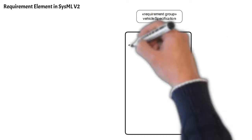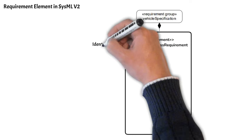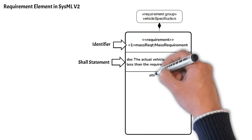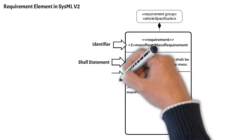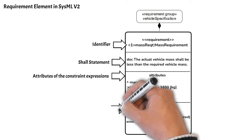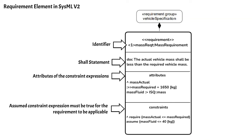The SysMLv2 requirement element has an identifier, a shall statement, attributes, and constraints. The attributes and constraints are new to SysMLv2 and allow modelers to quantify requirements more easily.